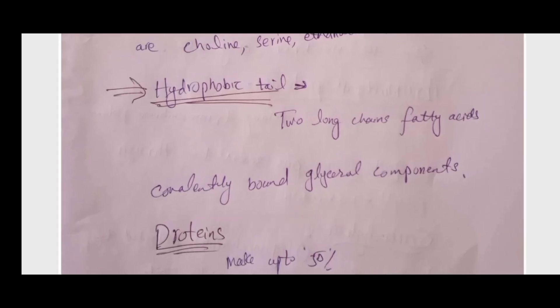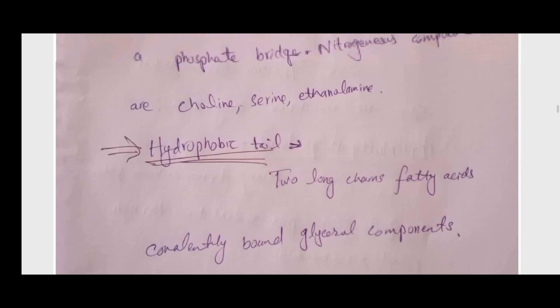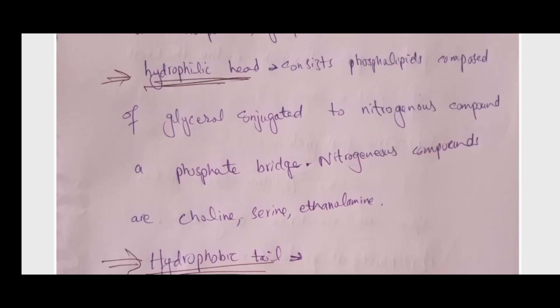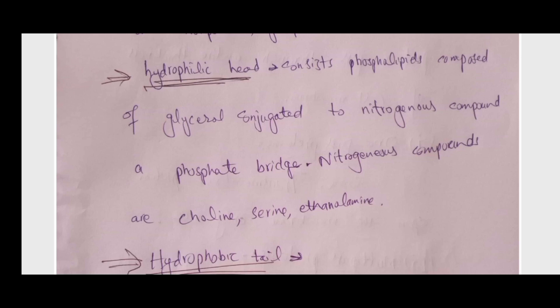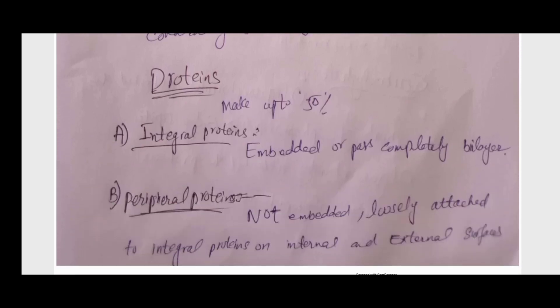The hydrophobic tail is composed of two long-chain fatty acids that are covalently bonded with the glycerol component. The tail is hydrophobic and non-polar. The head is hydrophilic and polar, composed of phospholipids conjugated with nitrogenous compounds such as choline, serine, and ethanolamine.